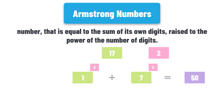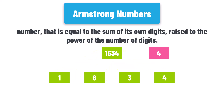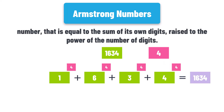Let's check another number, for example 1634. This number consists of four digits, which means we have four calculations with the power four: one to the power four, six to the power four, three to the power four, and four to the power four. The sum of these calculations is exactly the same as the number itself, therefore 1634 is an Armstrong number.